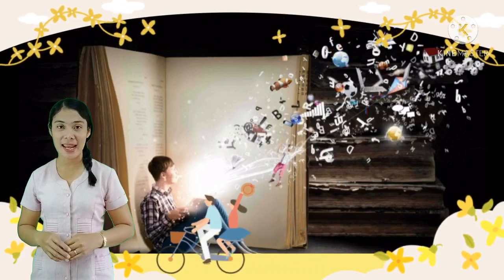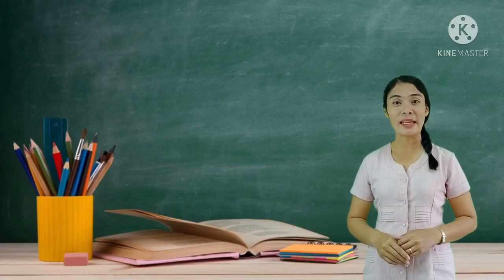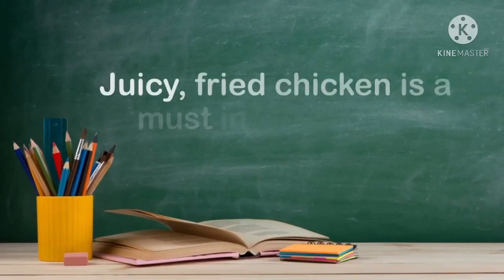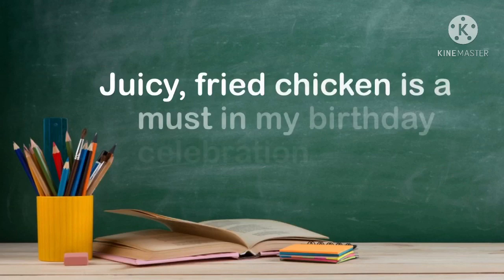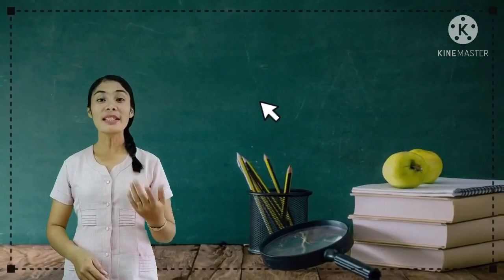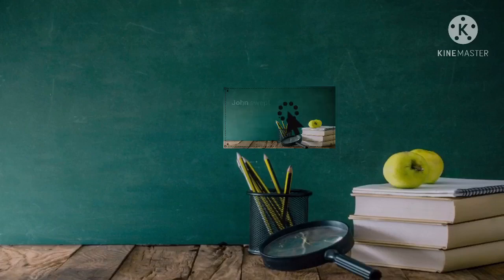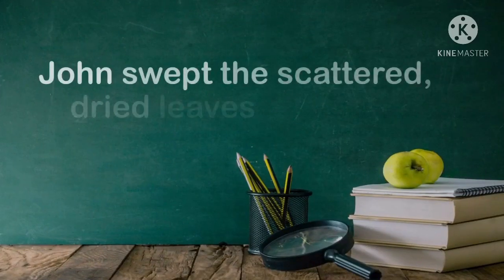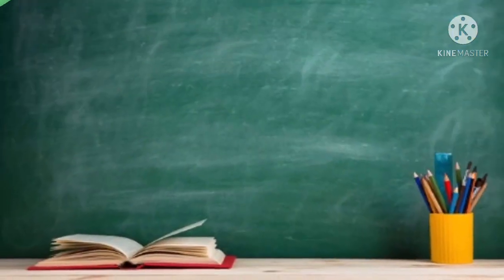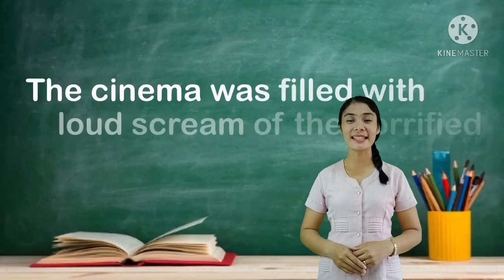For instance, what sense is the author appealing to in the sentence: 'Juicy fried chicken is a must in my birthday celebration next week'? What sense is the author appealing to in this sentence: 'John swept the scattered dried leaves in our small backyard'?